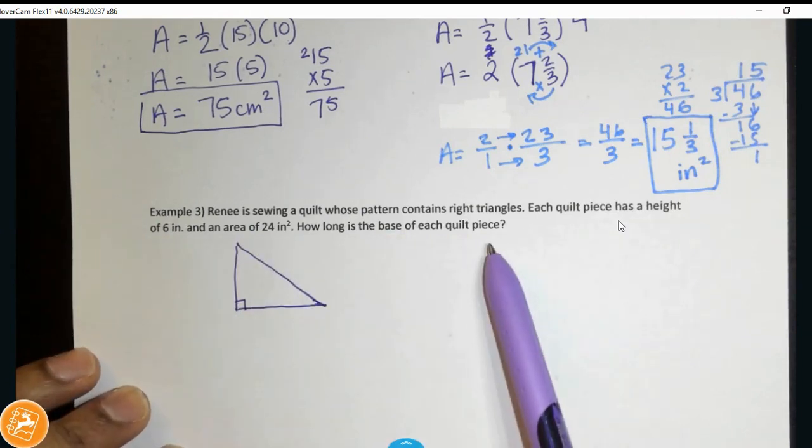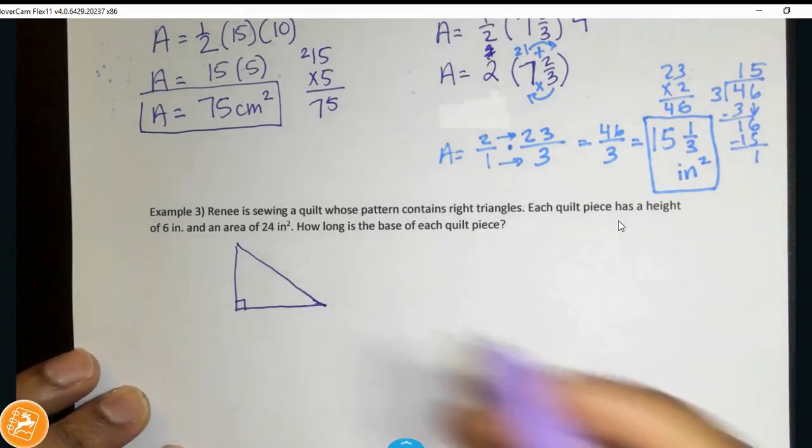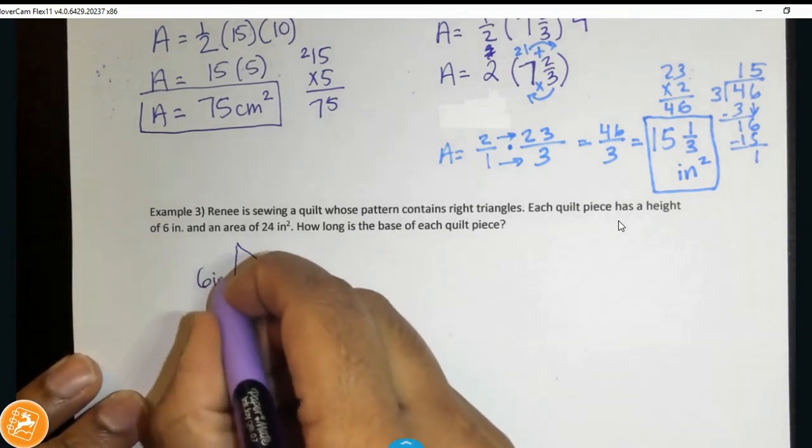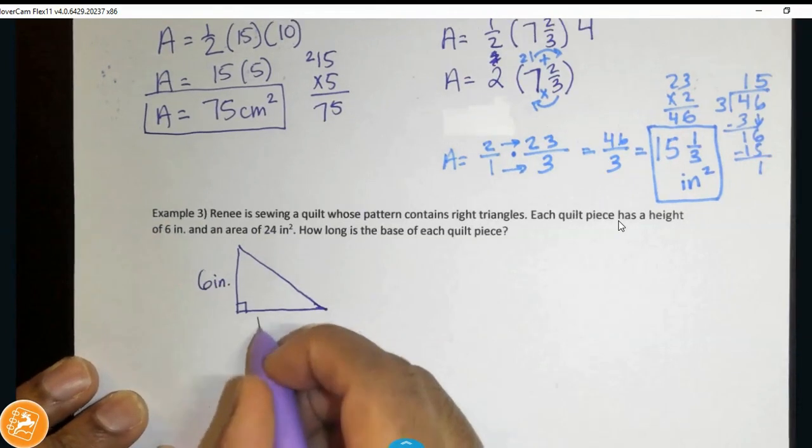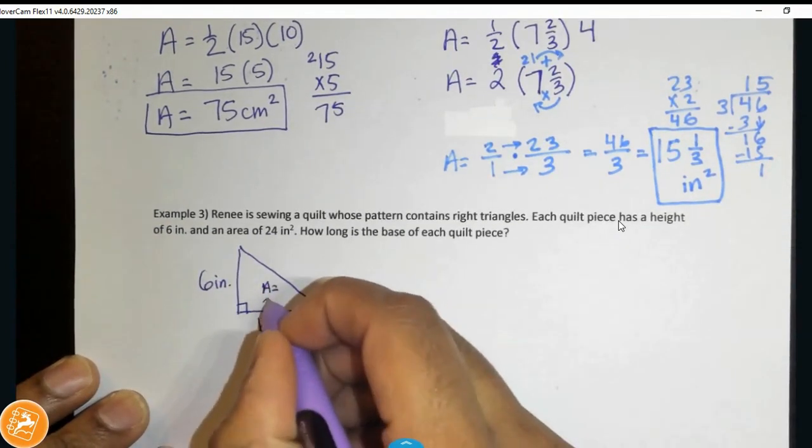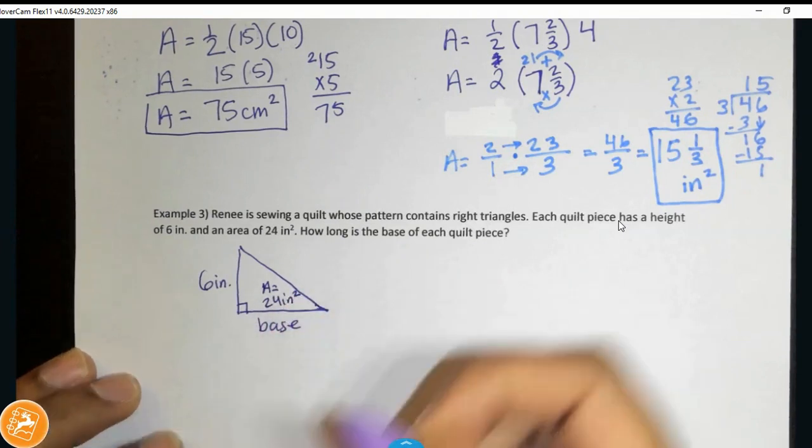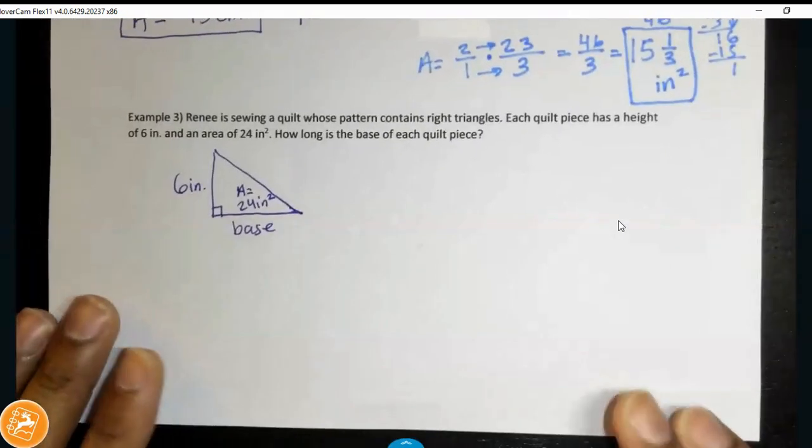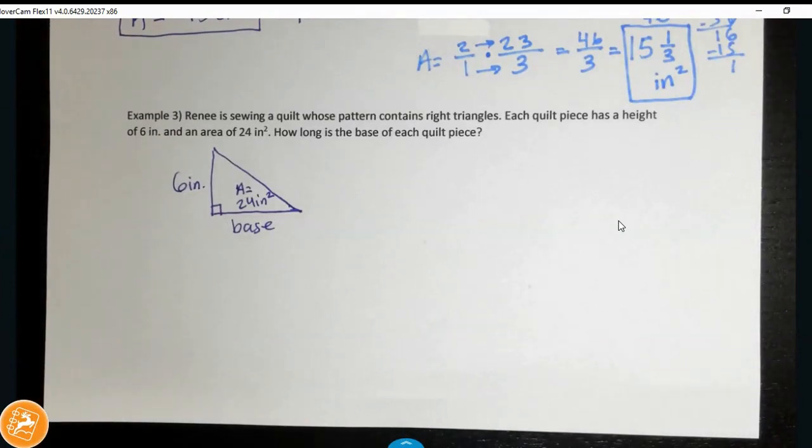Each quilt piece has a height of 6 inches and an area of 24 inches squared. How long is the base of each quilt piece? So, I know the height is 6 inches. I don't know the base. Base is what's missing. But I know that area is 24 inches squared. So, it's kind of like we're working backwards. We've got to do a little bit of problem solving.